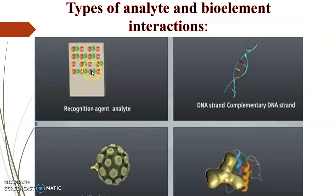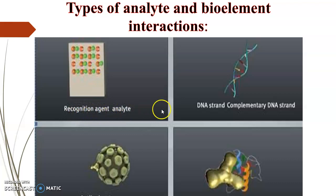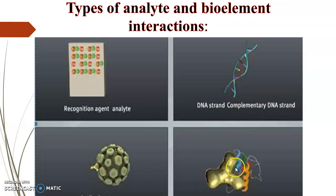This is how the analyte and the bioelement interact with each other. The recognition agent interacts with the analyte — for example, a DNA strand with a complementary DNA strand, or an antibody with a virus. This also includes biomarker antibodies and protein markers.